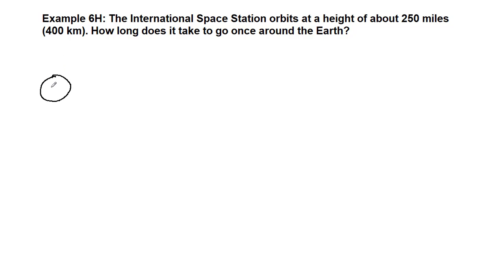So we have the International Space Station orbiting above the surface of the Earth. So we have the Earth, we have the orbit, very poorly drawn circle, and we want to recognize that the radius of this orbit, just like in the previous problem, is the height above the surface plus the radius of Earth.